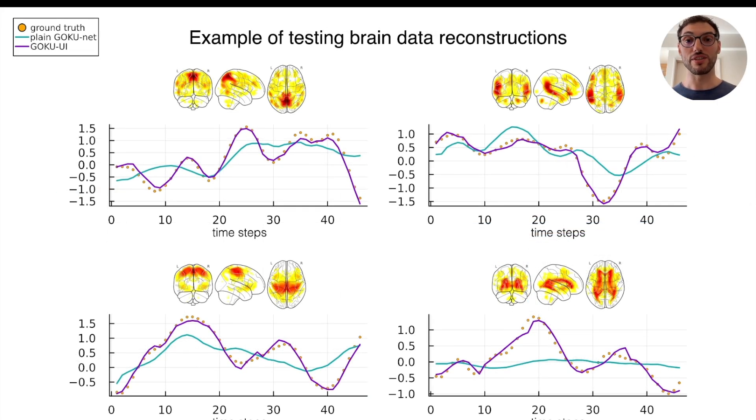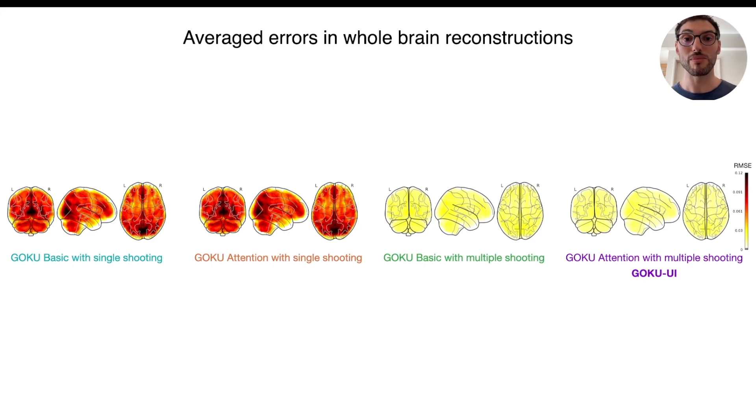Again, for having a visual inspection on the reconstructions, here are some representative ICA time components from test subjects. Once more, we can see that the Goku UI reconstructions in violet are much closer to the actual data than the plain GokuNets in turquoise. Lastly, we can also assess the performance on full-brain reconstructions by linearly combining the ICA spatial support components weighted by their corresponding time courses. Here we have a comparison of the average whole-brain reconstruction errors for the four GokuNet variants represented on a glass-brain visualization from three different perspectives. This visualization allows us to observe the impact of the multiple shooting training strategy and gain insights into the spatial distribution of errors across the brain.